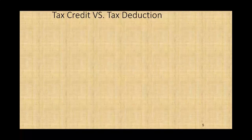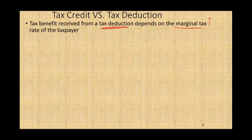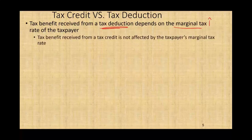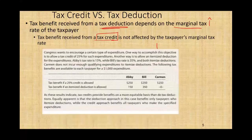Tax credit versus tax deduction: the tax credit gives you a dollar credit against each dollar in taxes you have. But the tax benefit received from a tax deduction depends on your marginal tax rate, so it's not going to be the same for everyone. The higher your marginal tax rate, the better the benefit from the tax deduction. The tax benefit received from a tax credit is not affected by the taxpayer's marginal tax rate — if you get a dollar tax credit and I get a dollar tax credit, it doesn't matter what our marginal tax rates are. However, if I gave you a dollar in tax deduction, it's not the same.